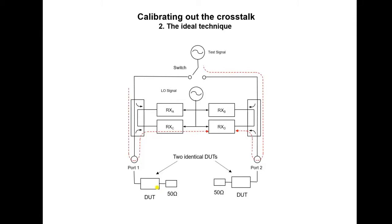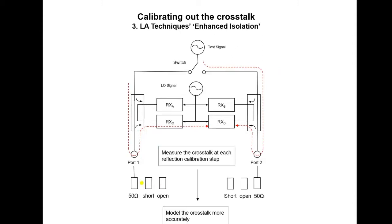Now let's look at a third approach which we use, or rather, is an option in the user interface software, and that is the enhanced isolation option. What we do is to take several crosstalk measurements and build a model to more accurately predict the crosstalk. When we do the calibration reflection measurements for 50 ohms, short and open, we also make a crosstalk measurement.